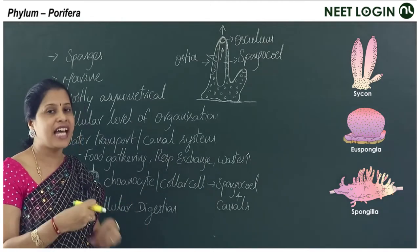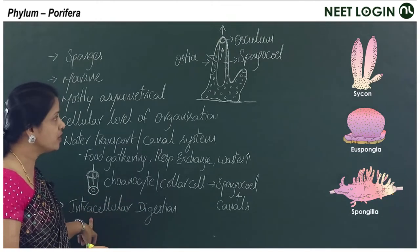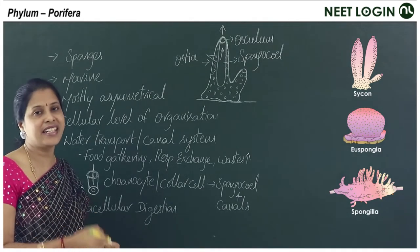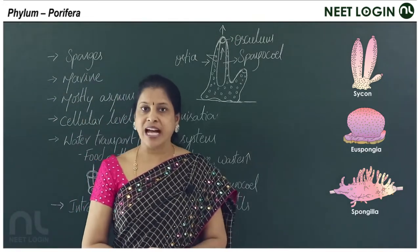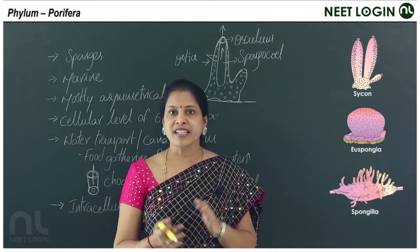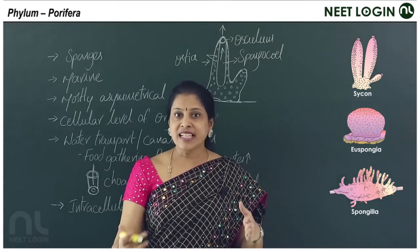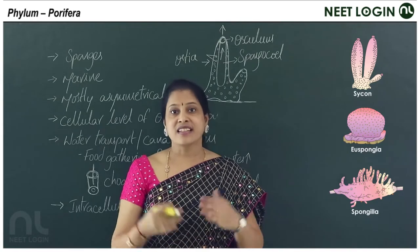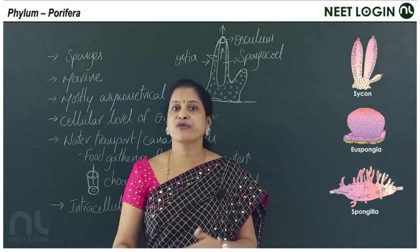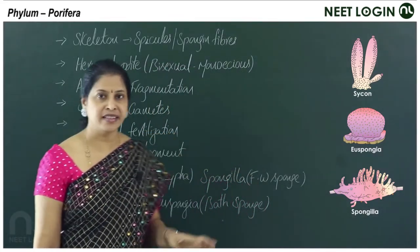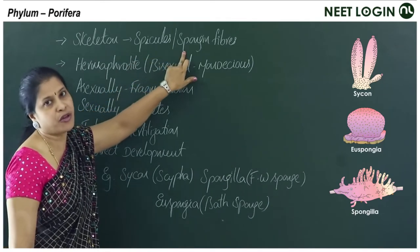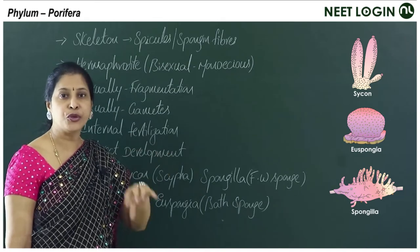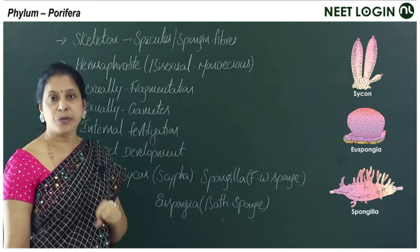The spongocoel is a cavity of the sponge. Digestion in poriferans is intracellular — occurring inside the cells. Though multicellular, the cells are not organized into tissues; they show functional isolation, each performing different functions. The body is supported by a skeleton made of spicules or spongin fibers, which provide support and protection.